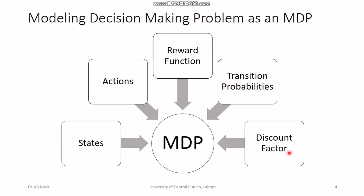The fifth component is the discount factor, which works on the reward you achieve right now versus the reward you achieve in the future. The discount factor ranges between 0 and 1. If it is close to 1, the reward right now is almost as good as the reward received after certain decisions. If it is close to 0, say 0.5, the reward right now is worth much more than future rewards. This encapsulates situations where you want to optimize things quickly rather than slowly.